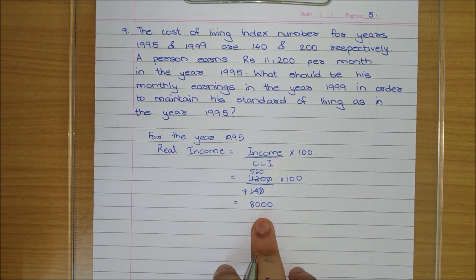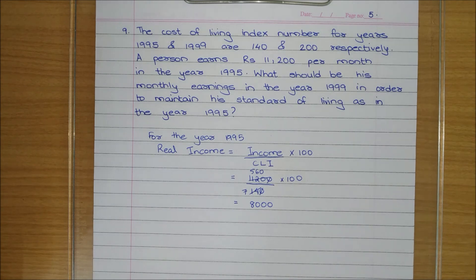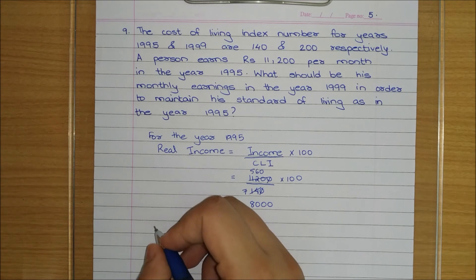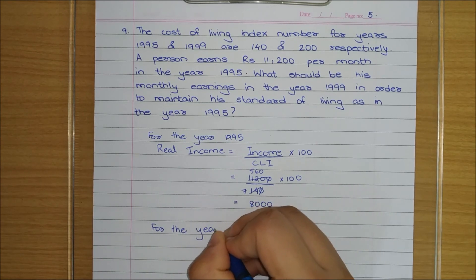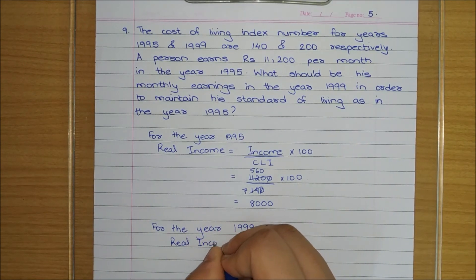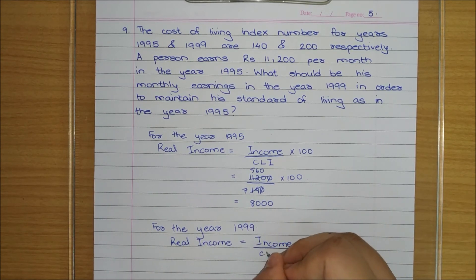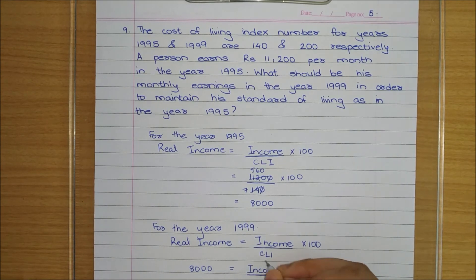We can cancel zeros and divide 1120 by 14, then multiply by 100. Dividing by 2: 560 divided by 7 = 80, so the real income is 8000. Even though he was earning 11,200, his real income based on the cost of living index was only 8000. To maintain the same lifestyle in 1999, his real income should also be 8000.